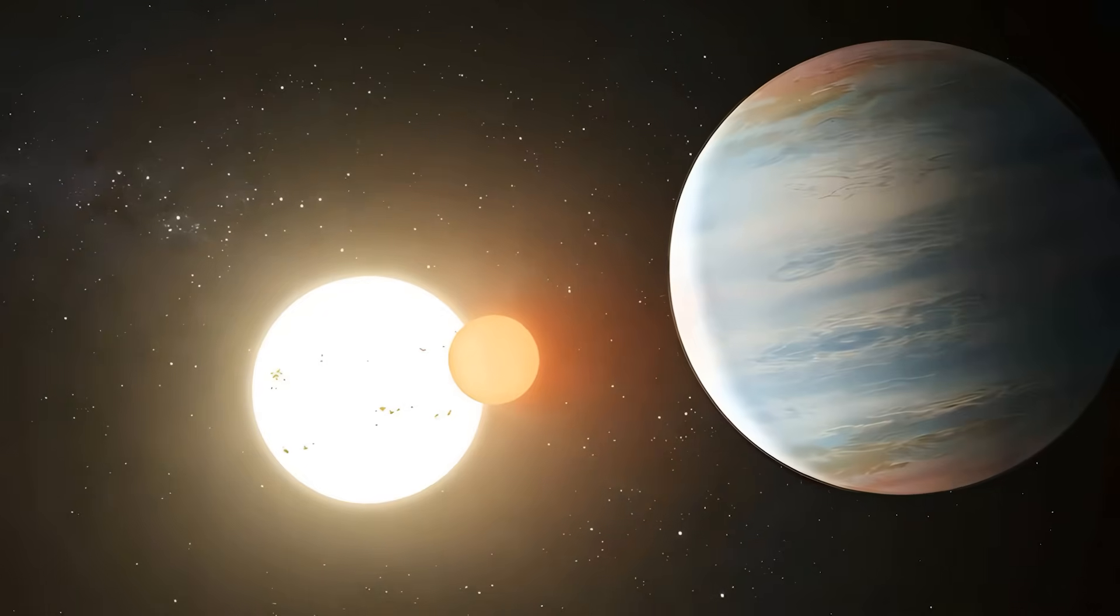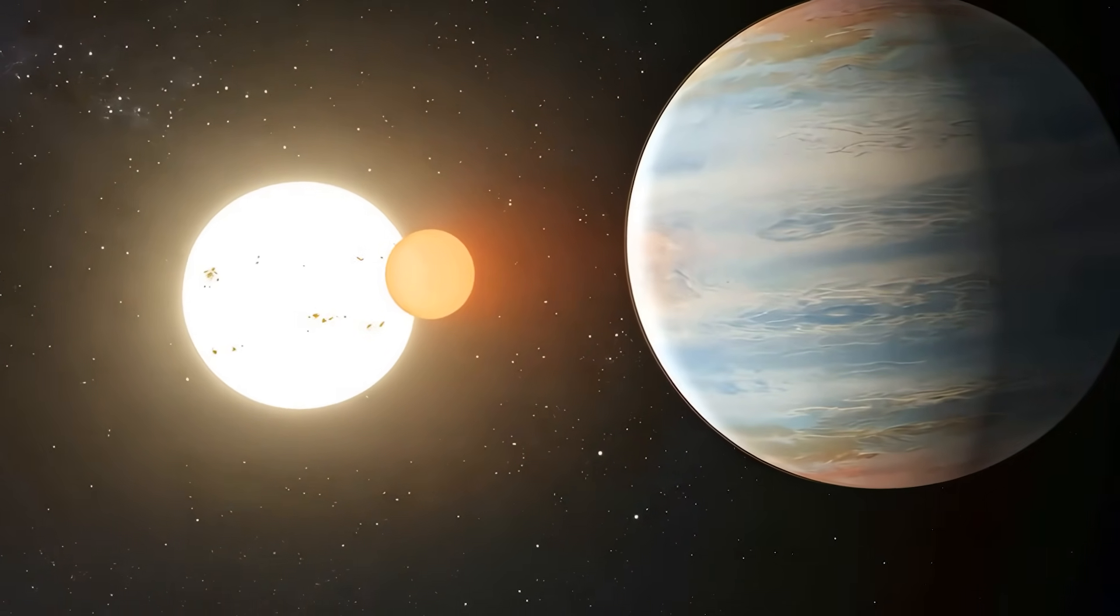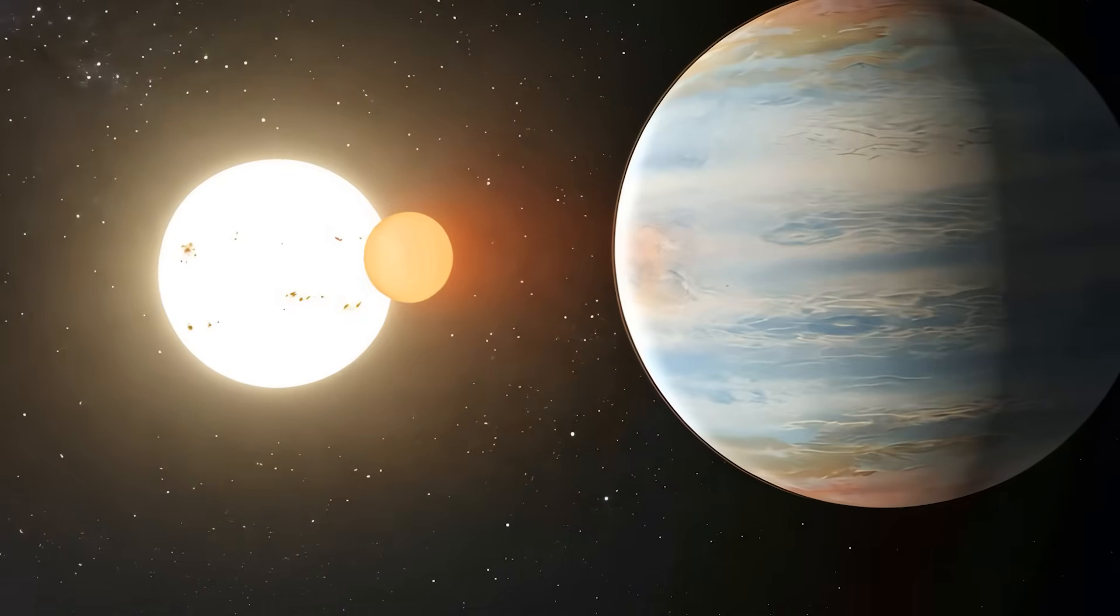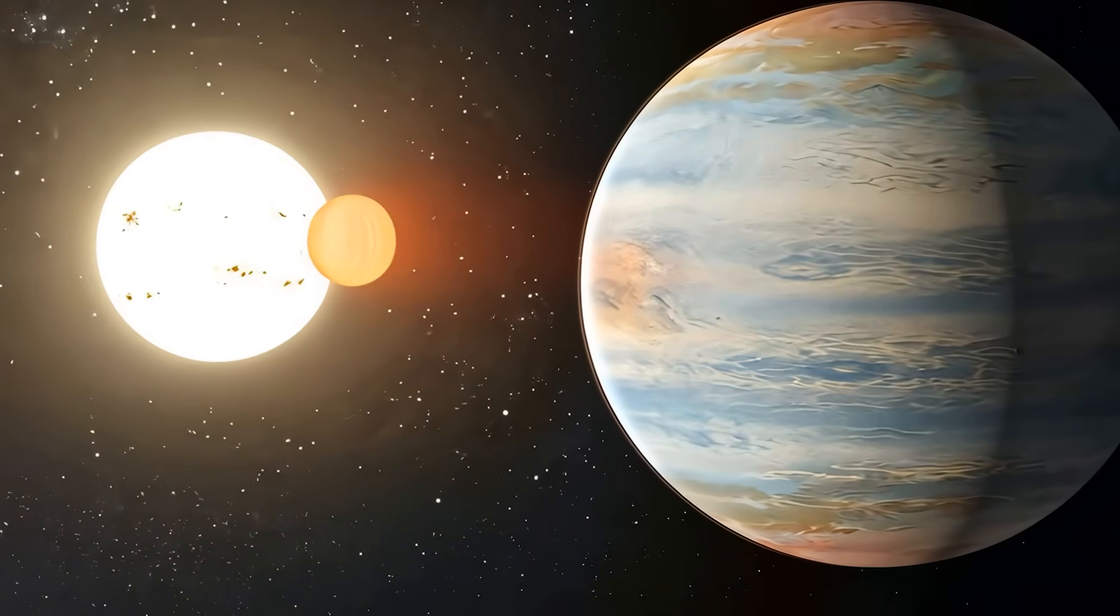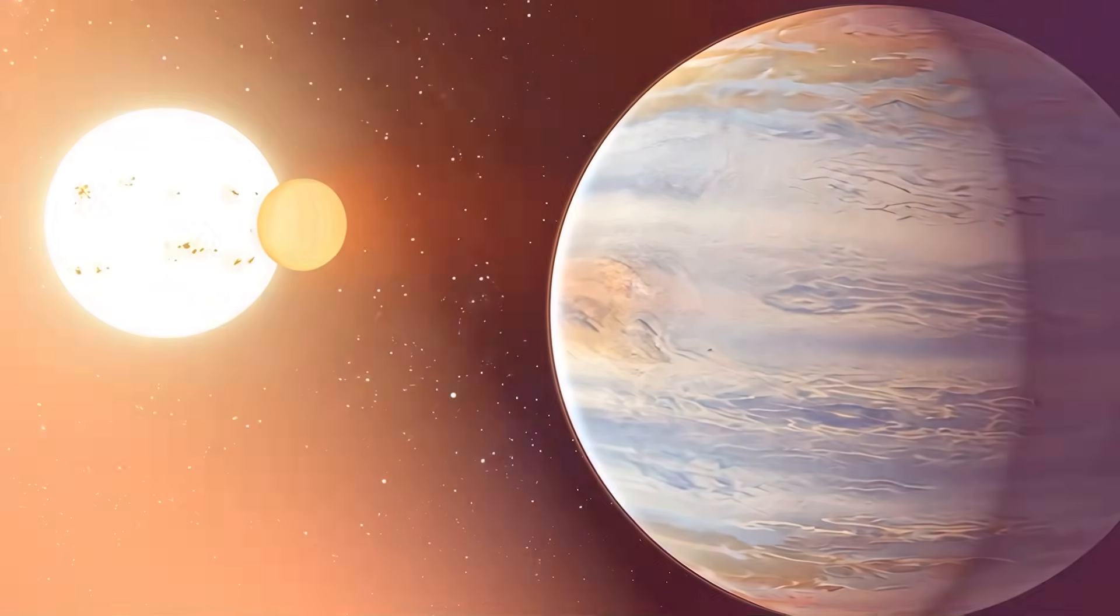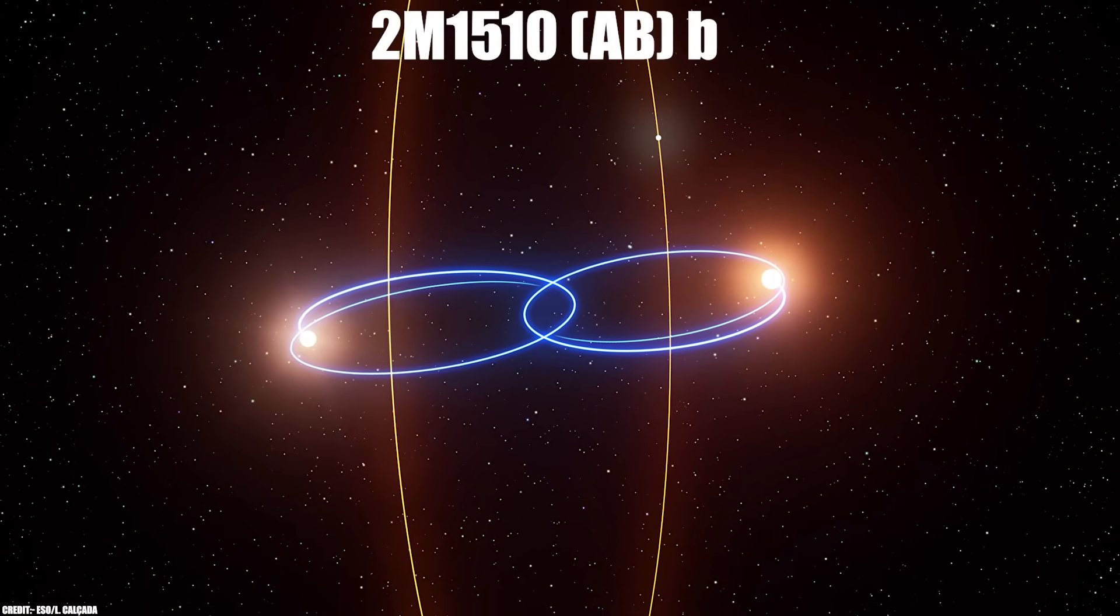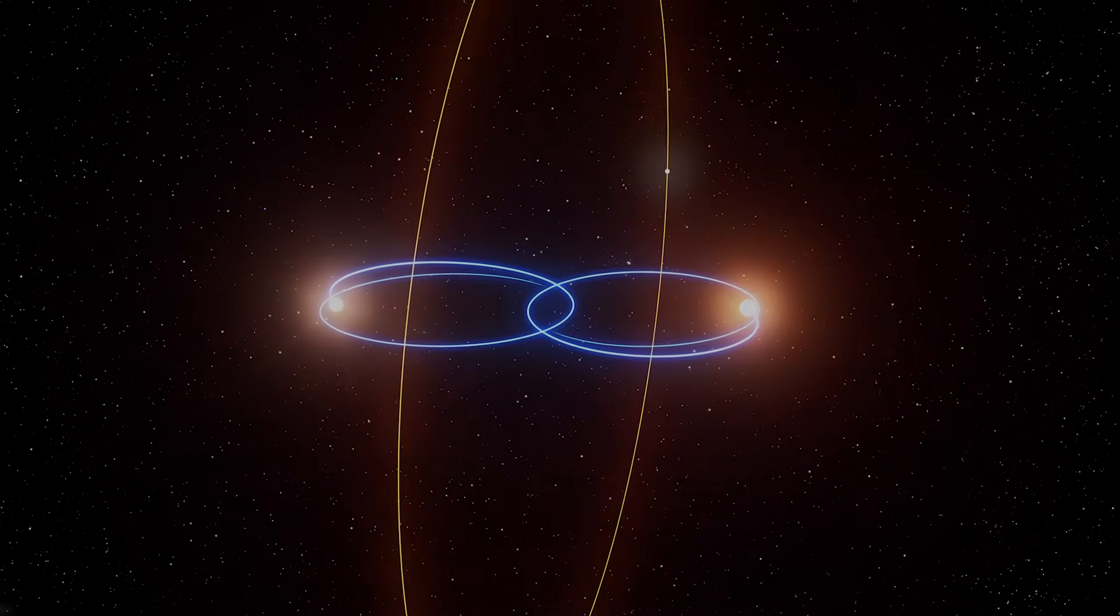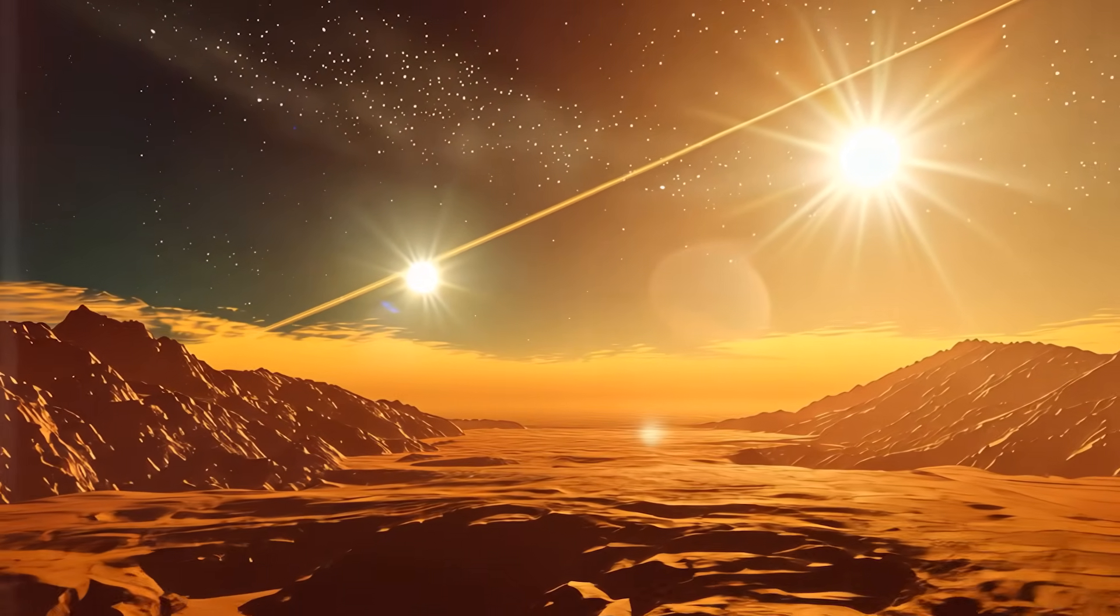Previous Tatooine planets we've discovered maintain orderly near-circular paths around their stellar pairs. They behave much like the fictional Tatooine, orbiting in roughly the same plane as their stars, giving rise to those iconic double sunsets. But 2M1510ABb breaks all these conventions. From its surface, you wouldn't see twin stars rising and setting together as Luke Skywalker did.